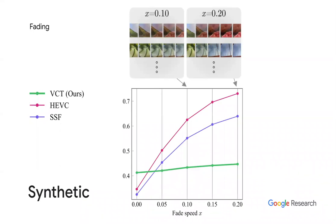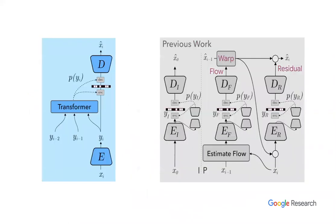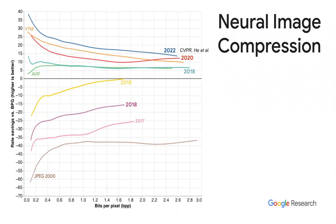Another interesting example involves two images being crossfaded — you don't have motion but you have changing pixel values. The transformer handles this quite well because it can predict appearance changes, whereas the traditional approach treats this as a failure case. This brings us back to the encoder-decoder-transformer diagram. As I said, most papers can be related to a similar diagram, but our point is we simplified it significantly.